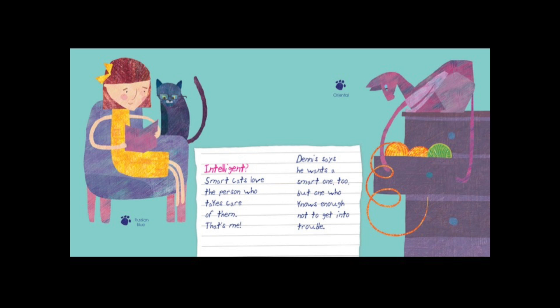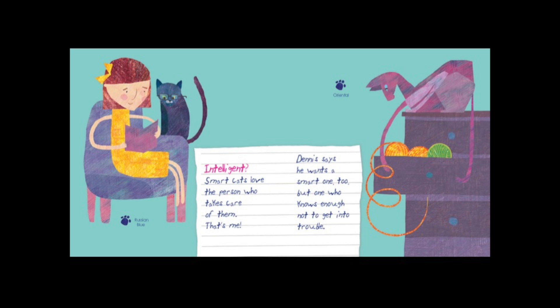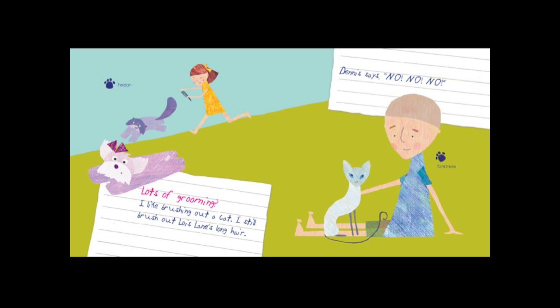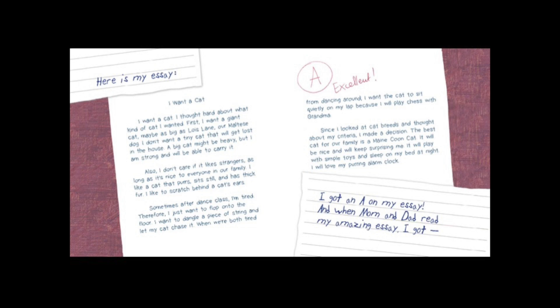Intelligent: smart cats love the person who takes care of them — that's me. Dennis says he wants a smart one too, but one who knows enough not to get into trouble. Independent: I do dance and piano classes and Grandma just taught me to play chess, so I can't take care of a cat all the time. Dennis says his cat needs to take care of itself all day — he just wants the cat to sleep on his bed. His mom caught Clark Kent on Dennis' bed and she was mad. Lots of grooming: I like brushing out a cat. Dennis says no, no, no. Other pets: we both have dogs, so our cats have to get along.